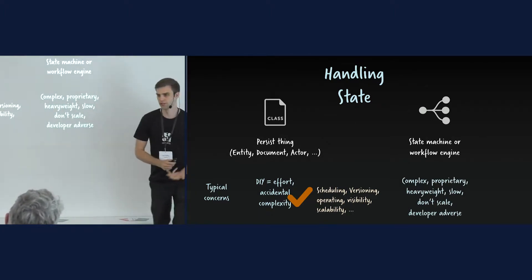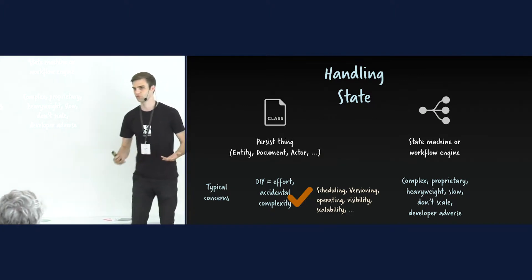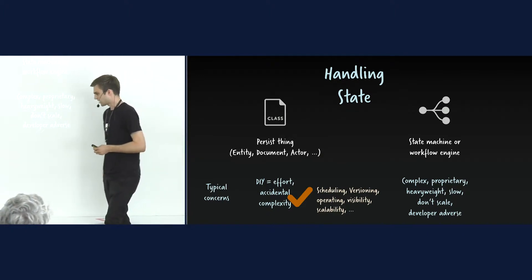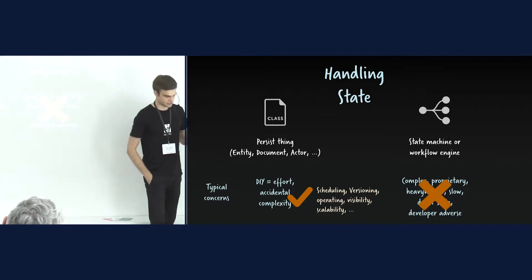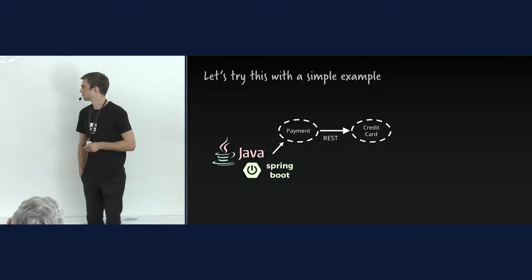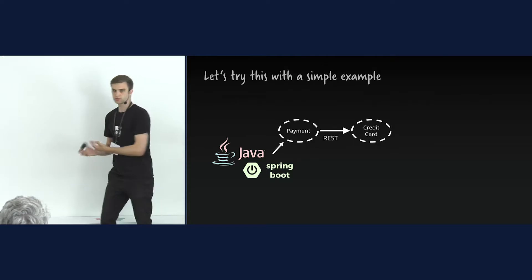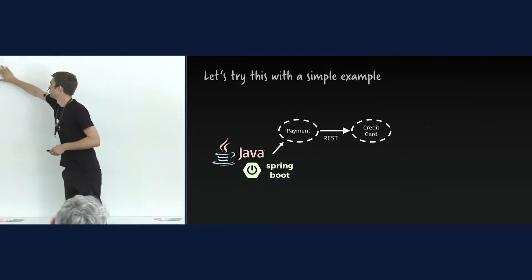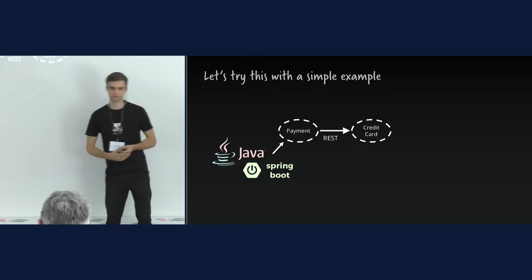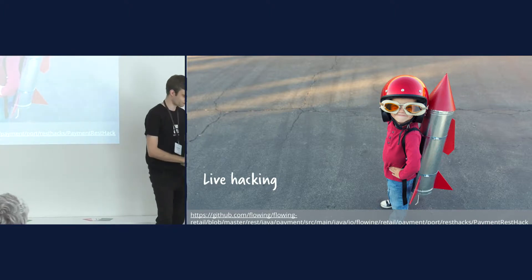When we recommend workflow engines, people often say these systems are complex — we tried a BPM solution ten years ago and it didn't work; they're proprietary, heavyweight, developers don't like them. We say it doesn't have to be the case. With a lightweight workflow engine, it can be very different. I want to show a quick example using Spring Boot with Camunda to create such a service simply. We'll concentrate on a payment example — trying to call a credit card charge service.